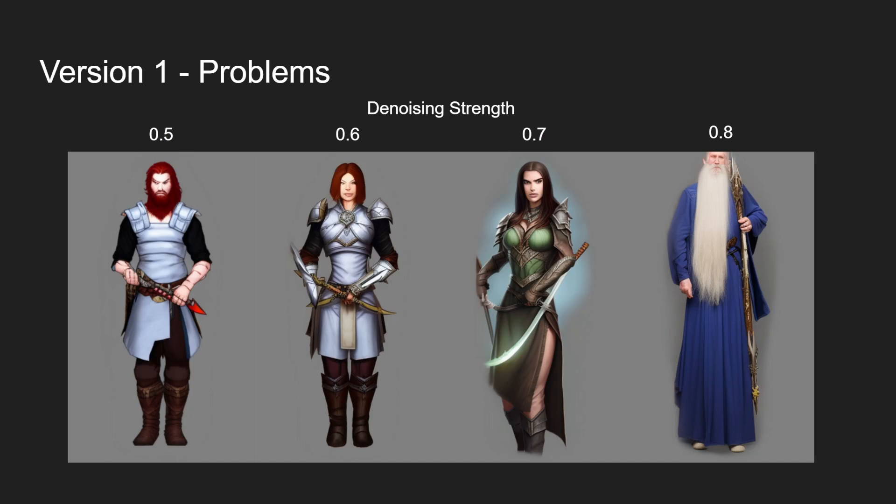There were some problems, however. It was really difficult to pick a denoising strength. If you went too low, a lot of your results would look very similar to your baseline image. And if you went too high, it would start changing the general shape a lot of the time, and you would start getting bad examples creeping in of things being cropped or not in the right shape.